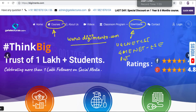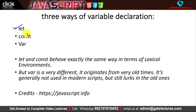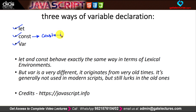So let us start. In JavaScript there are three ways of declaring variables. Number one is the let keyword, the second one is the const keyword, and the third one is the var keyword. The const keyword is used to declare constants.